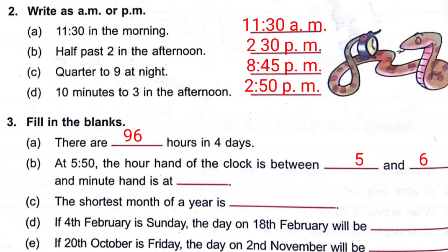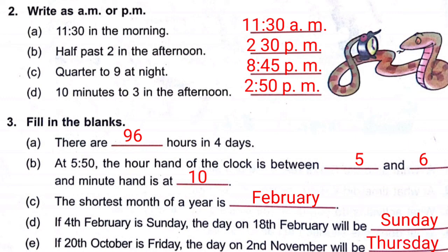Third — Fill in the blanks: (a) There are 96 hours in four days — 4 × 24 = 96. (b) 5 hours 10 minutes equals 310 minutes. (c) The shortest month is February with 28 days. (d) The last answer is Thursday.